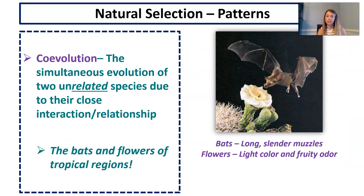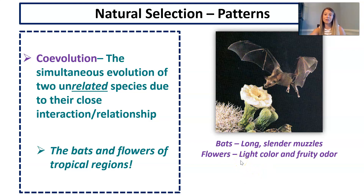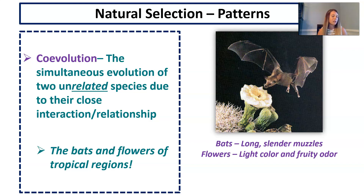Finally, co-evolution is the simultaneous evolution of two totally unrelated species because of their interaction and relationship with one another. For example, bats and flowers in tropical regions: the flowers are light in color and smell fruity because that's what bats can see and smell — the flowers with those traits were pollinated by bats and survived. The bats evolved long slender muzzles to get nectar from those flowers, and the ones with longer more slender muzzles survived, reproduced, and passed that trait on. That's co-evolution — evolving because of their interaction even though they're not closely related.